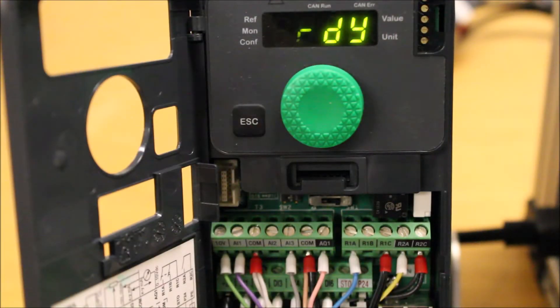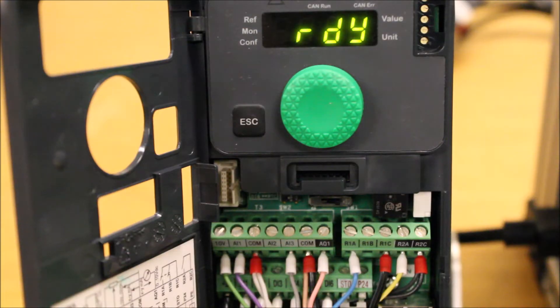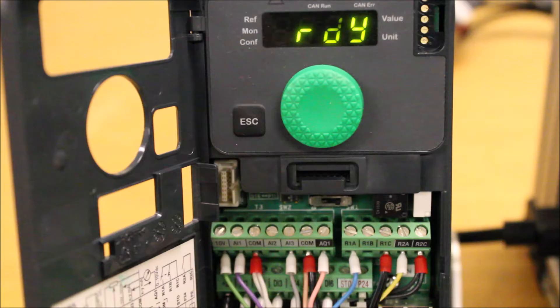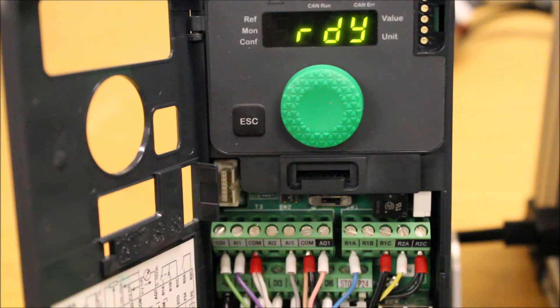In this video, we're going to talk about how to set up the preset speeds functionality on an ATV320 drive. The preset speeds are predefined speeds that you can toggle on to go to a specific speed. You can have individual speeds that are combined for each logic input, but you also can have combined digital inputs that can give you a different speed.